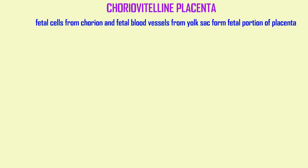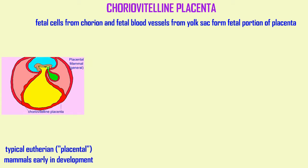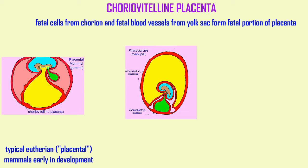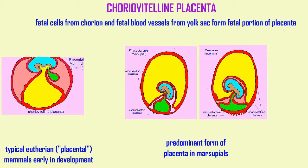There is another type of placenta in mammals — the choriovitelline placenta — in which fetal tissue from the chorion is joined by blood vessels from the yolk sac instead of the allantois. This is present in typical eutherian or placental mammals early in development, before the chorioallantoic placenta develops, and it is the predominant type of placenta in marsupials. Thus, marsupials are placental mammals; they just typically possess a different type of placenta.